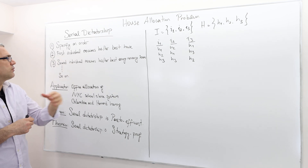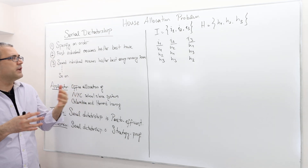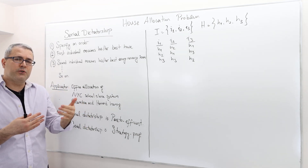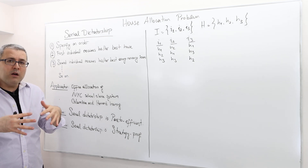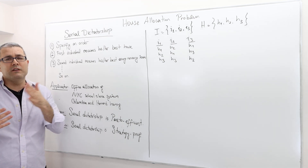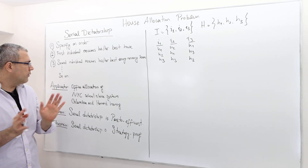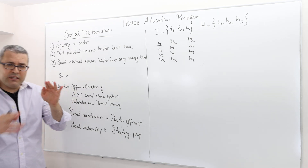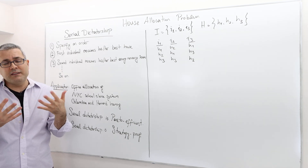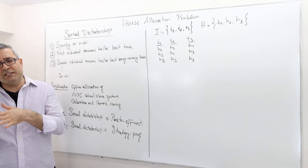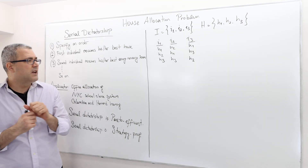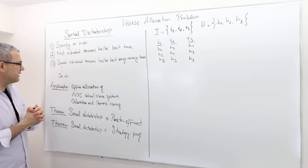After choosing this order, the first individual is going to receive his or her best house. Then the second individual is going to receive his or her best among the remaining houses. Then the third individual gets his or her best among the remaining houses, and so on. It is called serial dictatorship because everybody gets his best — but among the remaining houses — so we do it in a series. Hence the name serial dictatorship.